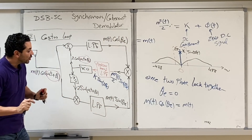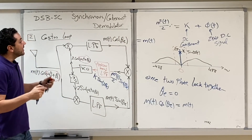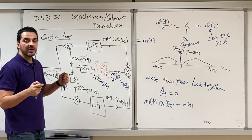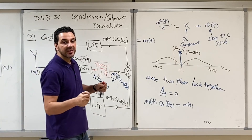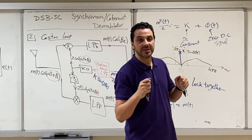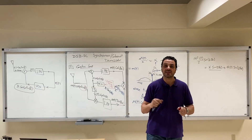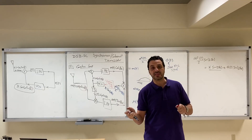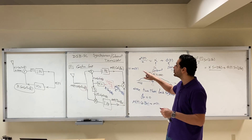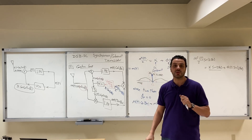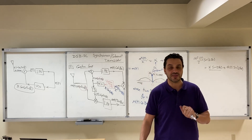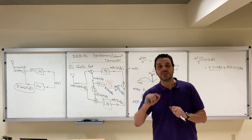These two methods — the squaring method and the Costas Loop — are used only for double-sideband suppressed-carrier signals. There are other circuits used for single-sideband and vestigial sideband, but these two methods cannot be applied to those cases.